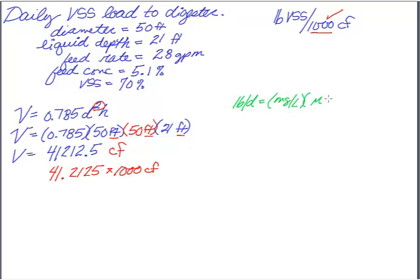The flow rate in MGD times a conversion factor of 8.34. And what that actually gives me is the pounds of total solids going to the digester. But what I'm interested in is how many pounds of volatile solids are going to the digester. So we are going to multiply this by the percent of volatile solids.